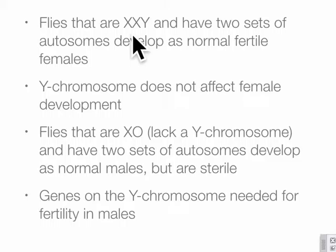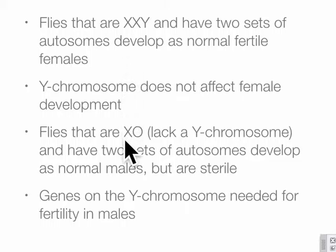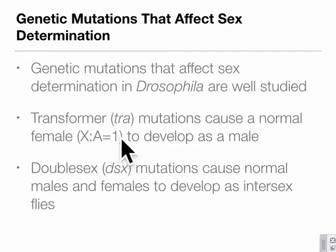An XXY fly in Drosophila — unlike in humans — is a perfectly normal, fertile female, indistinguishable from a normal XX female, because the Y has no effect on sex determination. A fly that is XO (single X, no Y) will look like a perfectly normal male but will be sterile, because the Y chromosome does carry genes needed for sperm development.